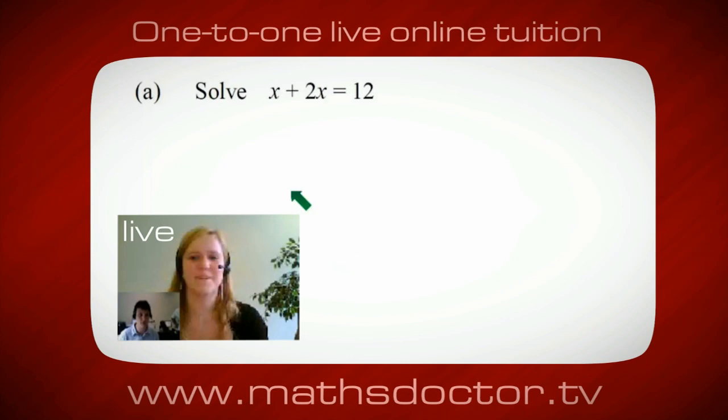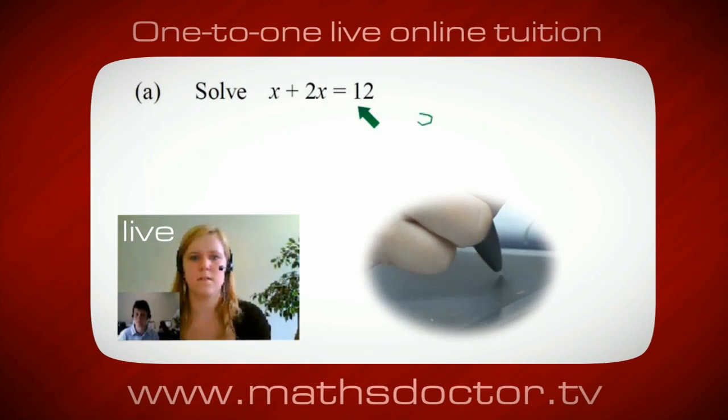OK, Marie, let's have a look at this one. Solve x plus 2x equals 12. What do you think you do first? OK, well, I want x on its own, so I would put x equals 12 minus 2x.